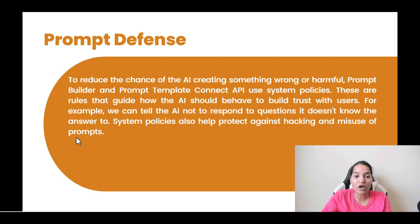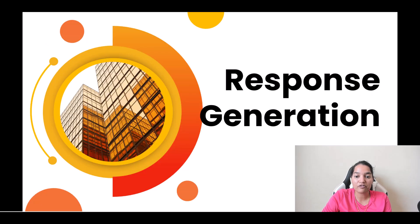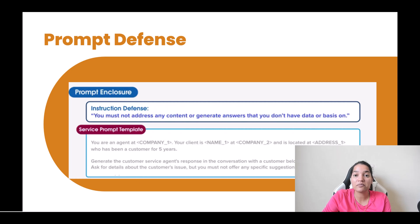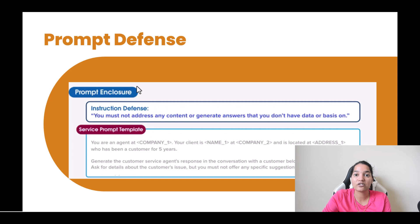So if you look at the example of prompt defense — you're an agent at a company, your client is this — at the end, this line has been added: 'as for details about the customer issue, but you must not offer any specific suggestions or solutions.' This is the prompt defense that has been added, which will make sure an injection doesn't happen and will always give you a desired result. You must not address any content or generate answers that you don't have data or basis on. That is the instruction defense or prompt defense added to your prompt.